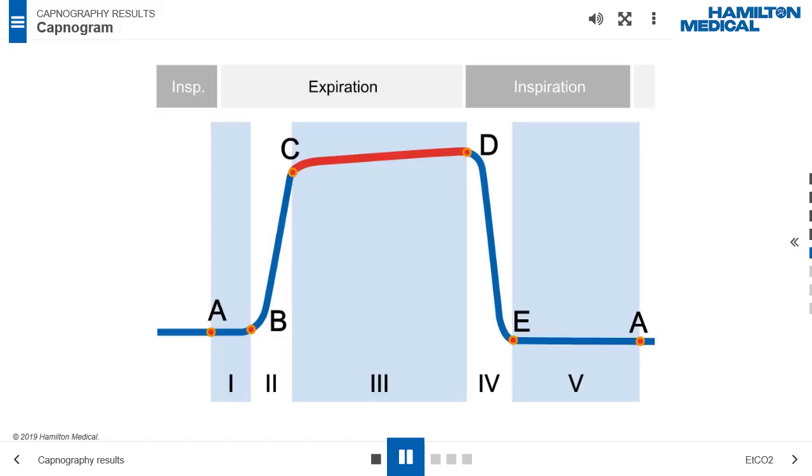Phase 3, C to D, at late expiration, all of the gas that passes the CO2 sensor is alveolar gas, resulting in the alveolar plateau.